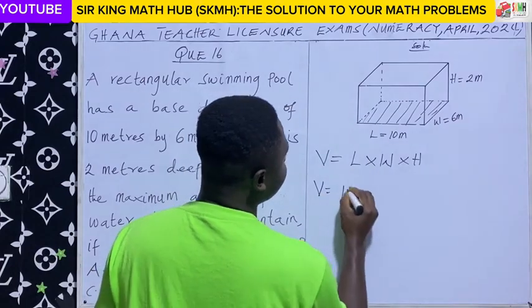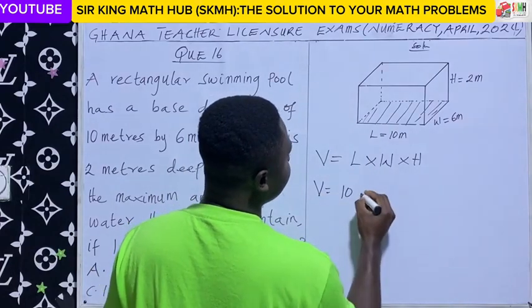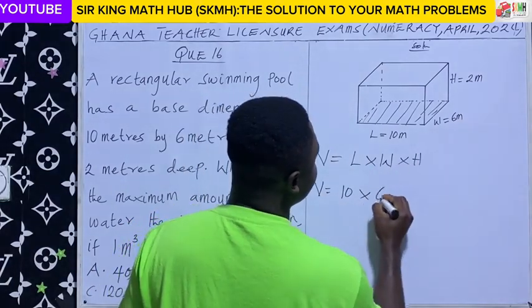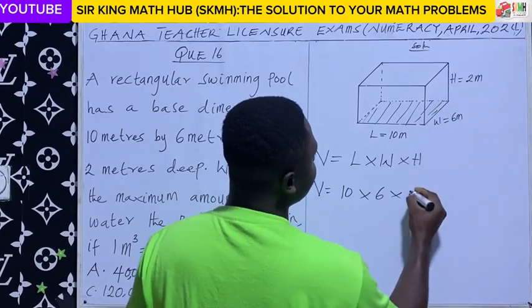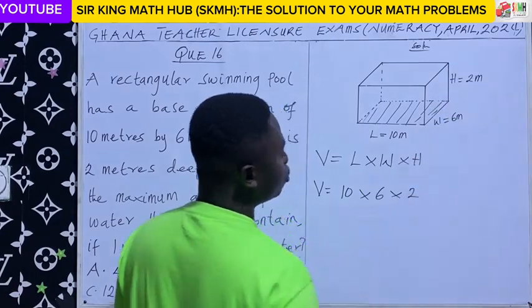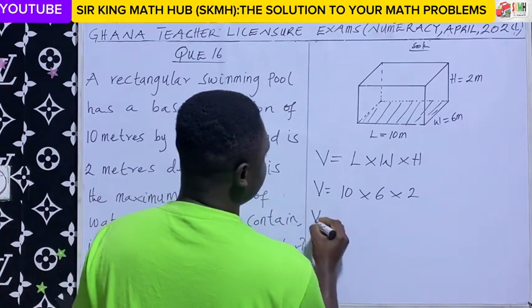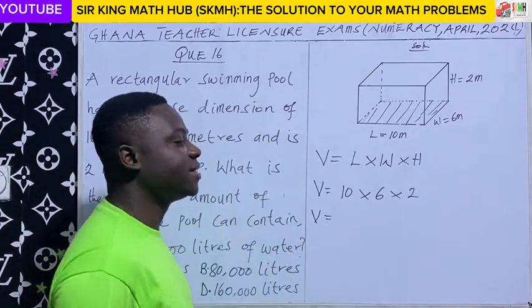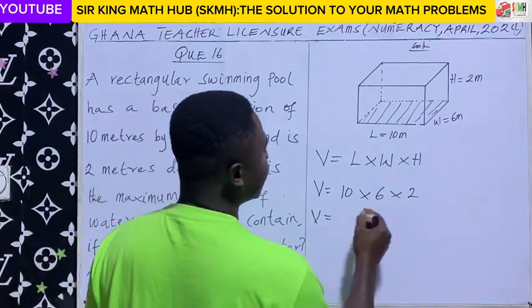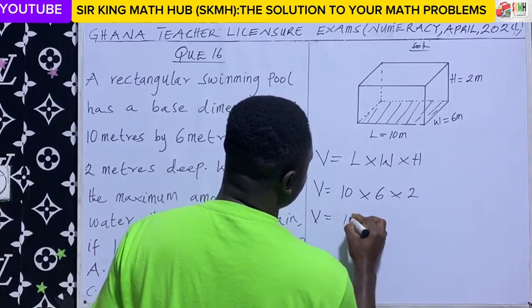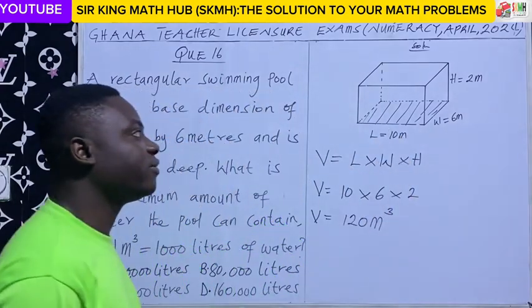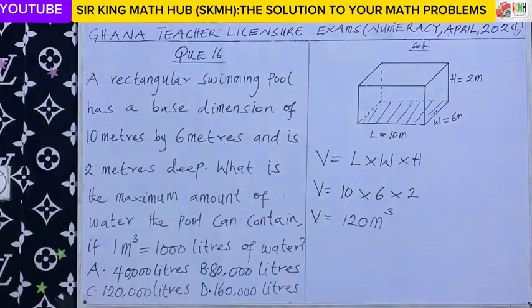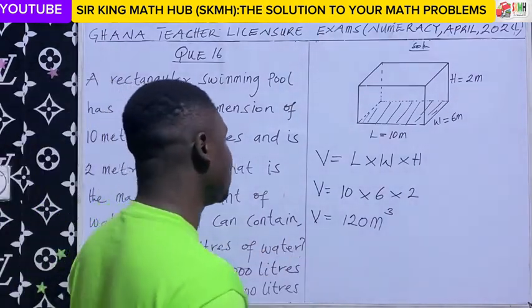So let's do the substitution. The length here was 10 meters, multiplied by the width 6 meters, multiplied by the height 2 meters. 10 times 6 is 60, and 60 times 2 is 120. So the volume of this pool is 120 meters cubed.